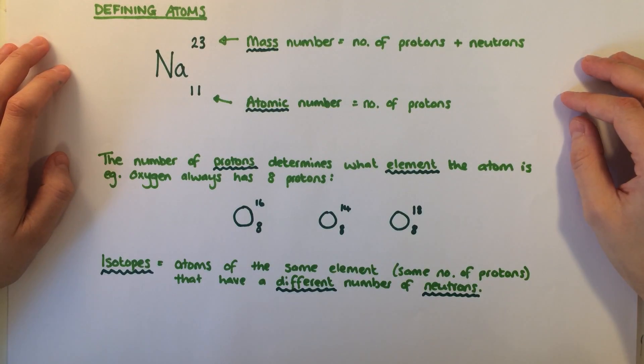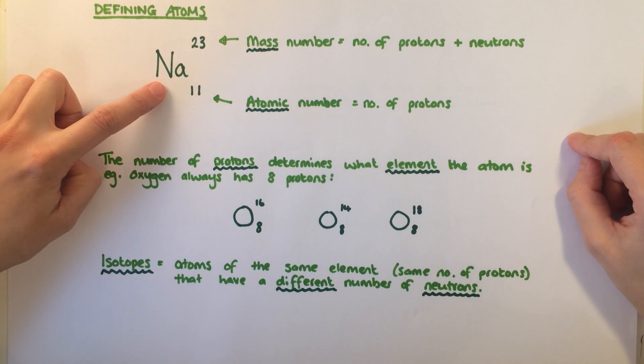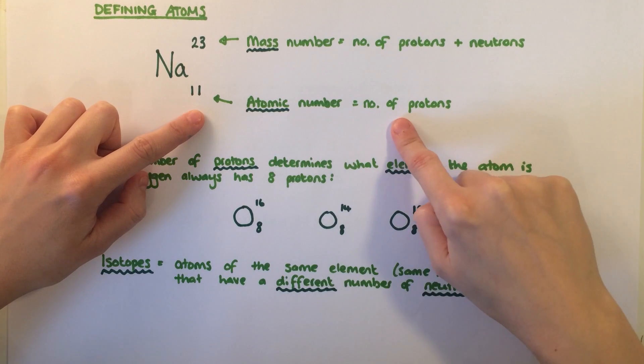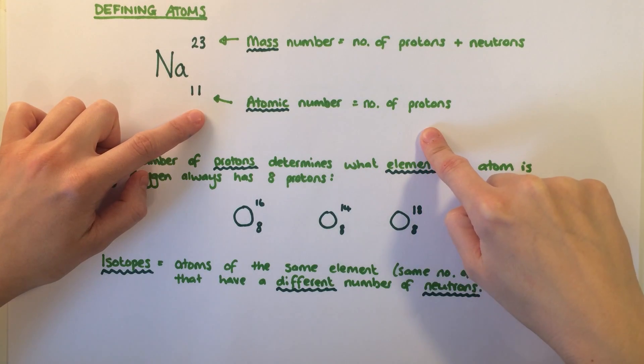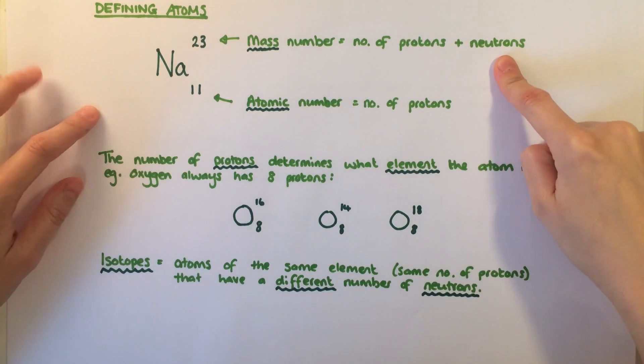We represent atoms using a symbol with two corresponding numbers. Here we have an atom of sodium, symbol Na. The bottom number is the atomic number, which tells us the number of protons. The top number is the mass number, which tells us the number of protons and neutrons combined.